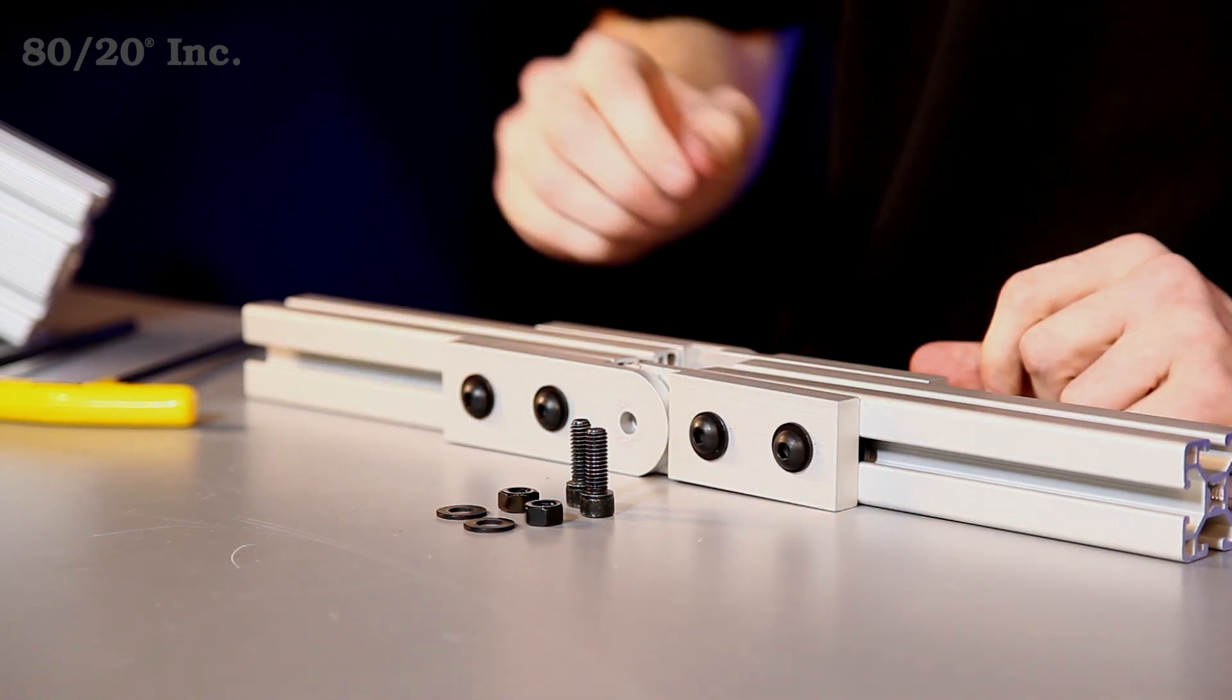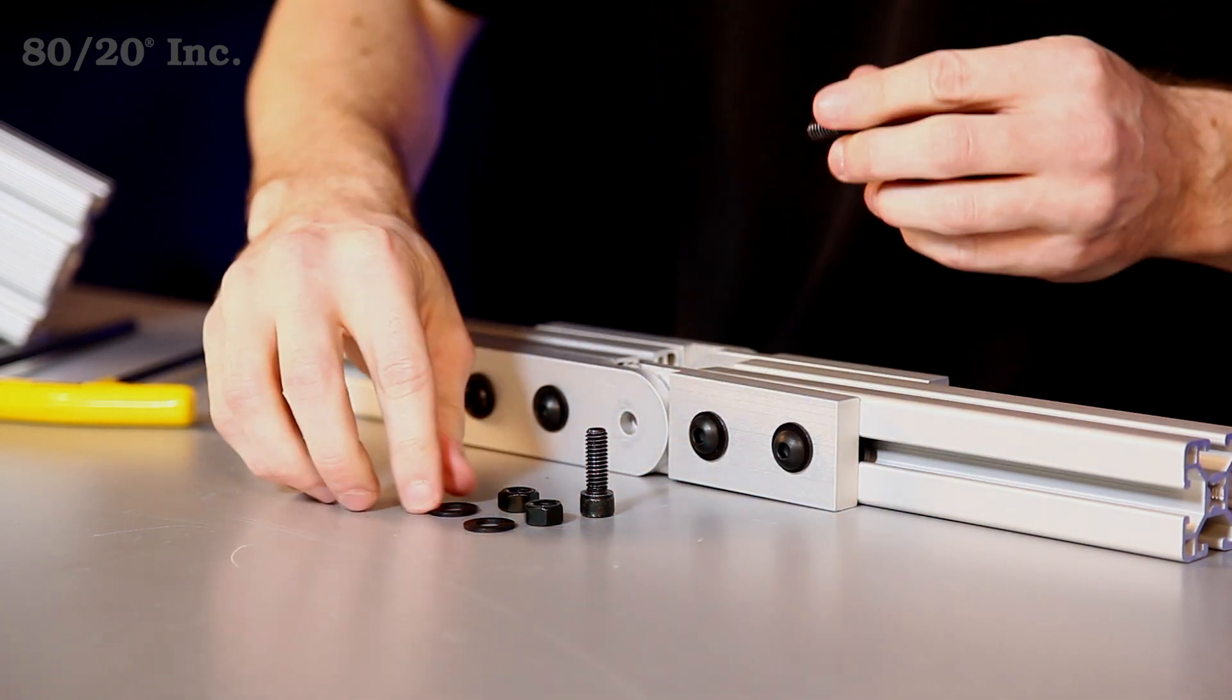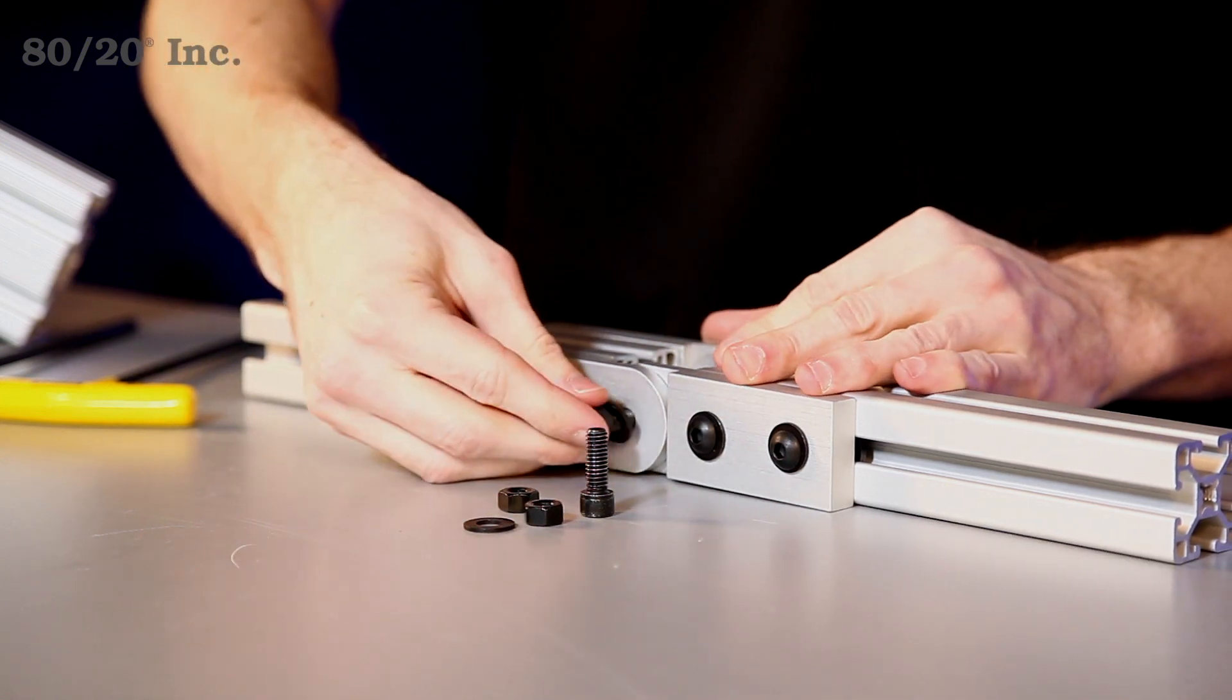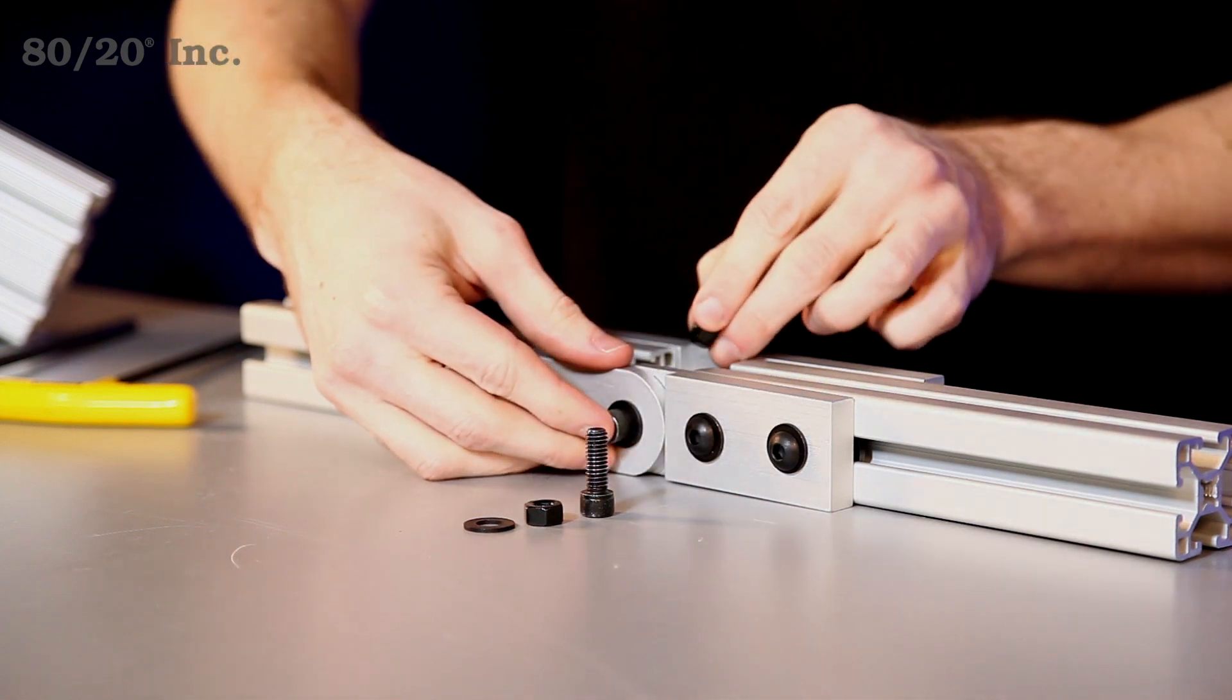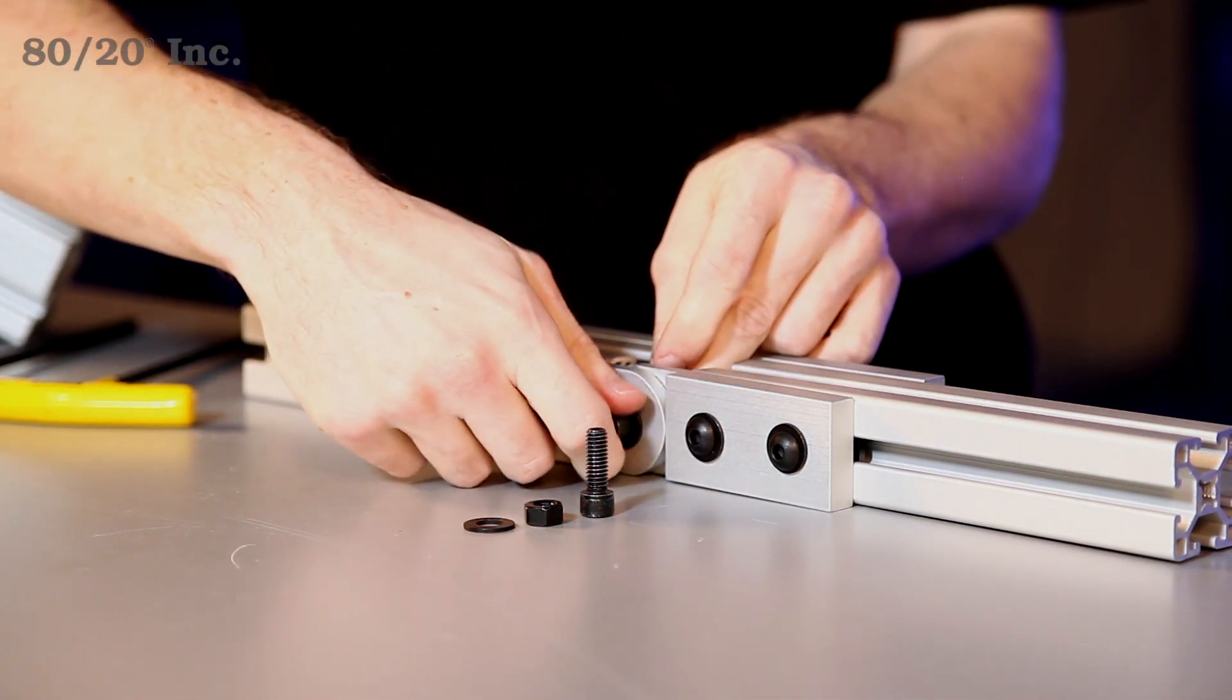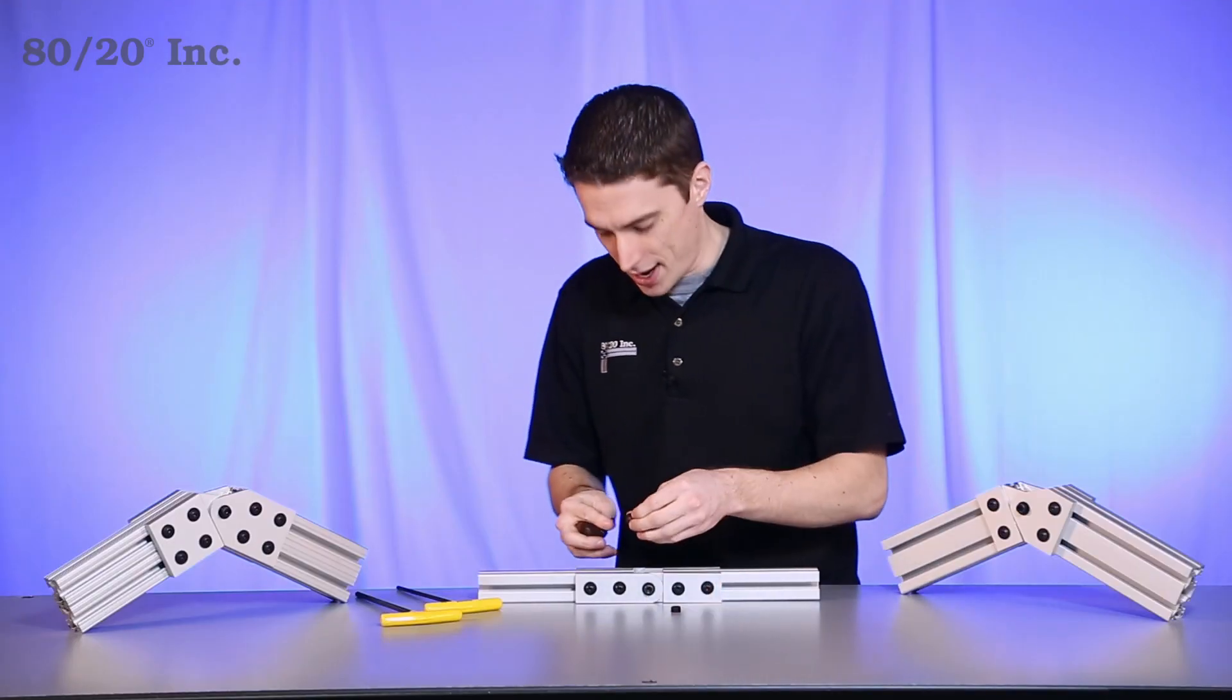Once we have those lined up, we'll take our center bolts one by one and feed them through. We'll get that one on there with a hex nut and hand tighten it down.